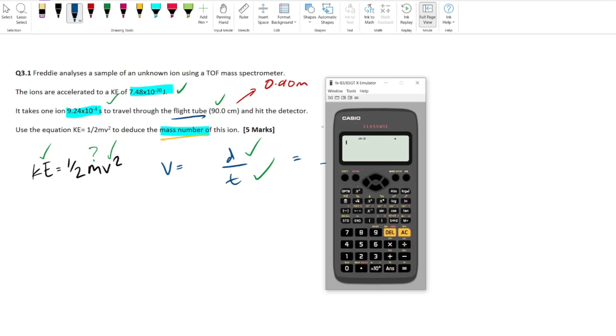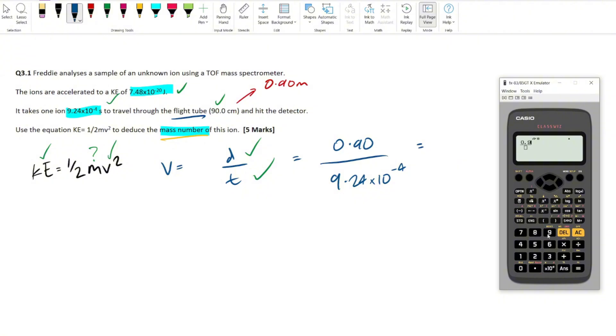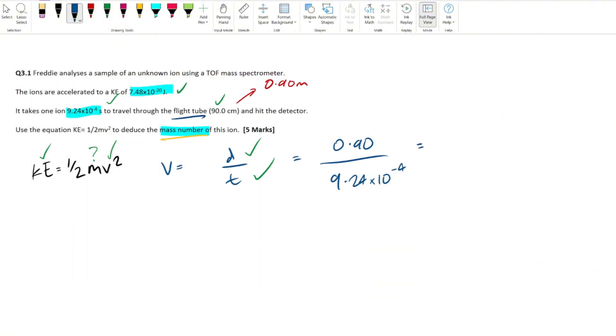Before you get our calculator up, 0.9 divided by 9.24 times 10 to the minus 4, what does that give us? It gives us 974.02597 meters per second. It's going pretty fast, but not that fast compared to other ions. The speed at which the ion travels is dependent on its mass, so we can tell straight away that this is going to be a pretty heavy isotope or ion based on the fact that its velocity is not that high.